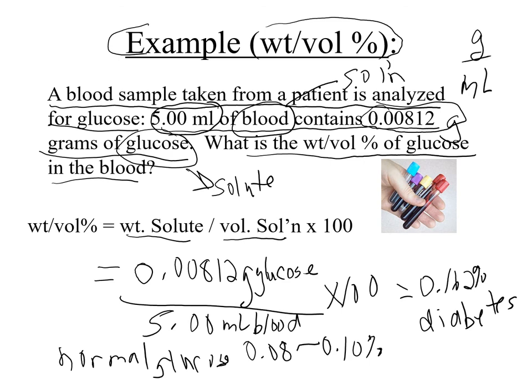Another reason for a high glucose level is eating before a blood test. You're always asked not to eat before going for a blood test, because eating will cause your sugar levels to go up — so that could also explain why this patient has a high glucose level.